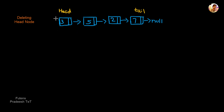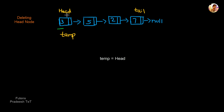Now we are doing the first condition. We are going to delete the head node. We have 3 nodes. The first step is to create a temp variable. You need to point the temp variable to the head node.